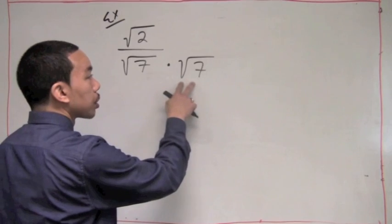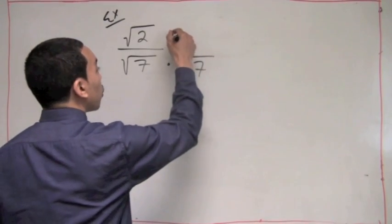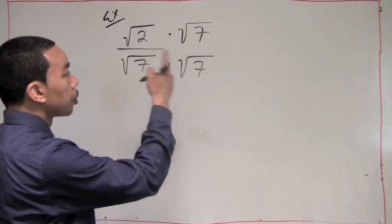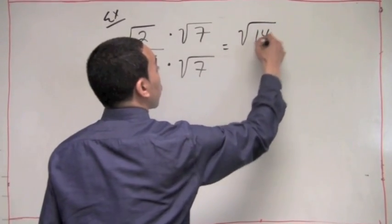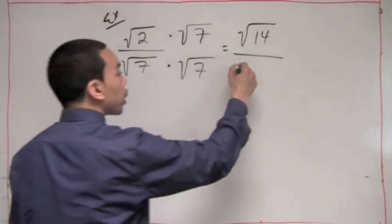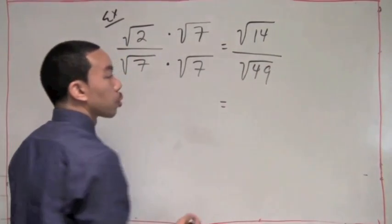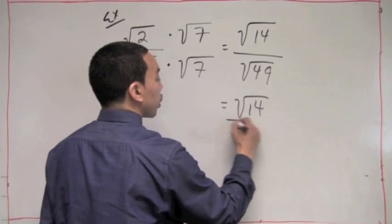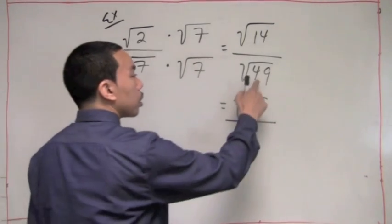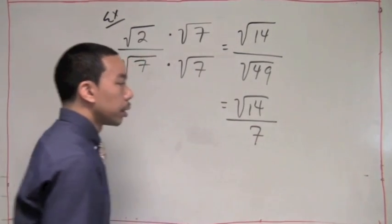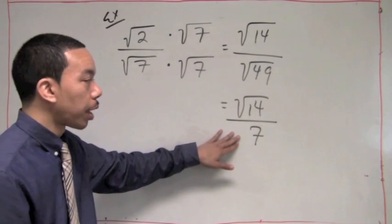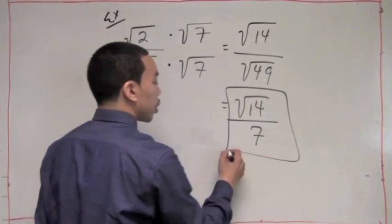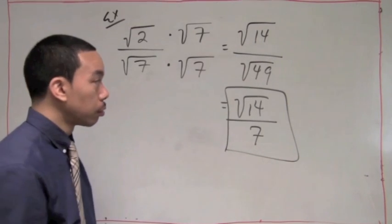So the next step is to multiply the square root of 7 times square root of 7, but we have to do the same thing to our numerator: square root of 7 times the square root of 2. So the square root of 2 times square root of 7 gives us square root of 14 over the square root of 49. The square root of 49 is a perfect square — it equals 7. Now we don't have a radical in the denominator, so it's considered simplified. There's nothing wrong with a radical in the numerator. Our solution is square root of 14 over 7. We've rationalized the denominator.